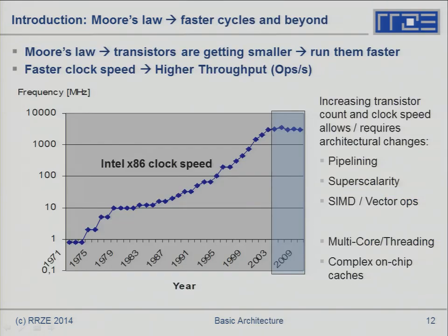For a long time, Moore's law translated directly to faster clock speeds: more transistors on the same chip space means smaller transistors, and smaller devices switch faster. At the same time, the increasing transistor count enabled implementation of many interesting hardware ideas. Five hardware features implemented since the early 1970s will be briefly covered here because they are often performance-limiting factors or major contributors to peak performance.